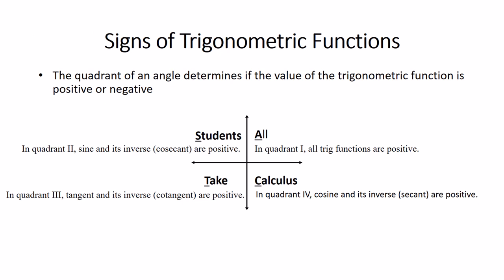The quadrant of an angle determines if the value of the trig function is positive or negative. Remember the phrase 'all students take calculus.' All means in quadrant 1, all trig functions are positive. Students: quadrant 2, sine and its reciprocal cosecant are positive. Quadrant 3: tangent and its reciprocal cotangent are positive. Quadrant 4: cosine and its reciprocal secant are both positive. Everything else is negative in each respective quadrant.